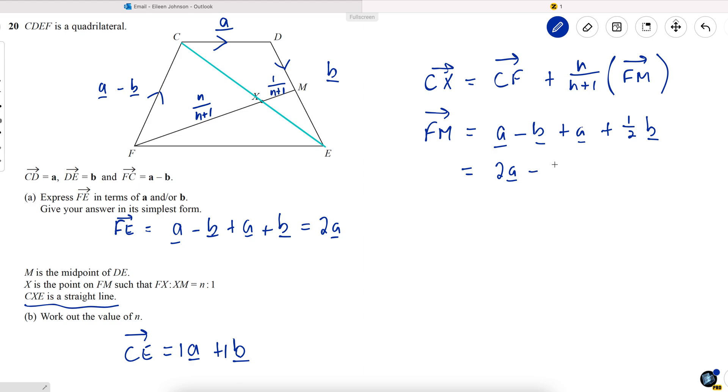So now CX equals CF, which is the negative of this, B minus A. Plus N over N plus 1 of FM, which was 2A minus a half B. I'm going to multiply out this bracket, so 2N over N plus 1 for the A component. Minus, and that 2 in the denominator can go here, and we have N over 2N plus 1, B.